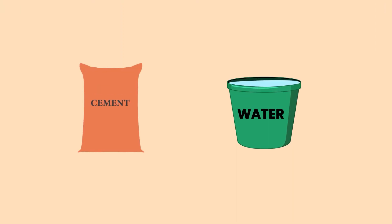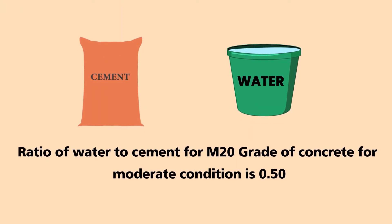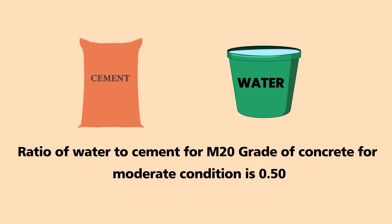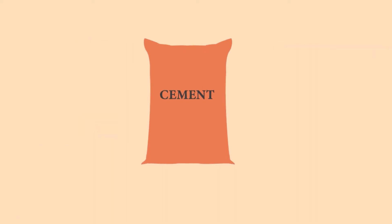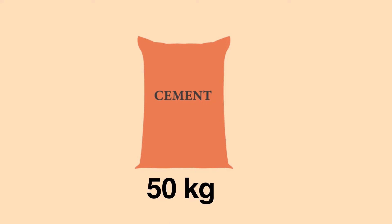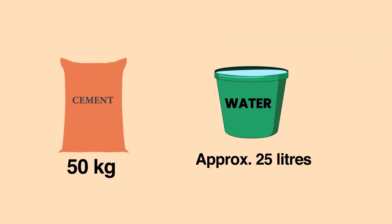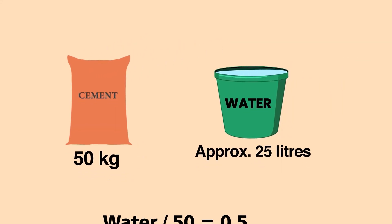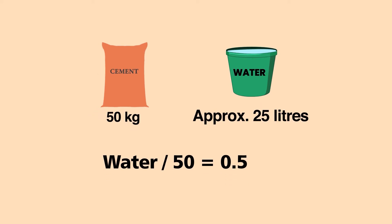As per IS-456, the ratio of water to cement for M20 grade of concrete under moderate conditions is 0.50. One bag of cement weighs 50 kg. With a water-to-cement ratio of 0.5, 25 litres of water is required for 50 kg of cement — 25 divided by 50 equals 0.5.